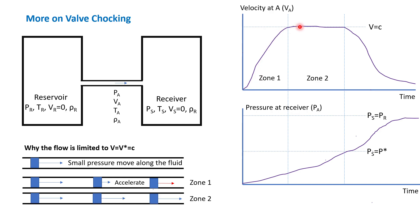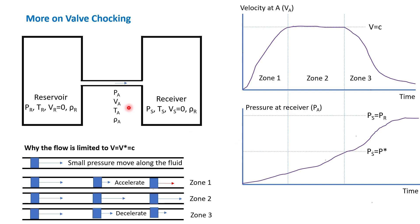At zone two, however, since the velocity is the same, the movement here cannot be faster than the movement of the sonic. Basically, this zone cannot give information to another zone to move faster. The flow stays at constant velocity during zone two until the pressure reaches the critical value. Since PS keeps increasing, you can no longer keep pushing all the time, because the pressure here is no longer low enough for the gas to move as fast as it can. This is how we can visualize what happens during valve choking.